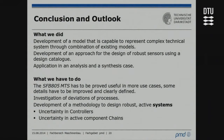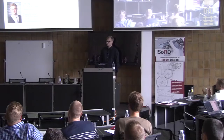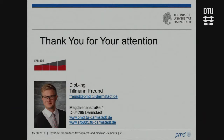In summary, we developed a model capable of representing technical systems through the combination of already existing models. We developed an approach for the design of robust sensors using a design catalog for disturbances, and we had applications in both an analysis and a synthesis case. What we still need to do is prove the model further, as it has not been applied in many cases. Our goal of robust design in active systems still requires investigating uncertainty in controllers and uncertainty in active component chains. Thank you for your attention.